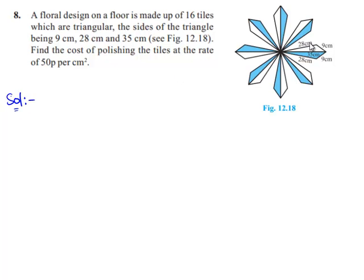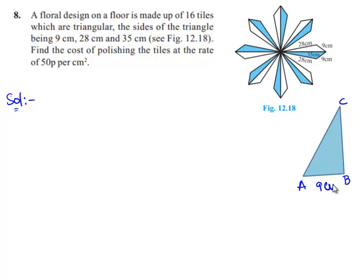Given in the figure is the floral design containing 16 tiles which are triangular. We shall first consider one triangle — let this be one triangle out of the 16 triangular pieces of tiles. We shall name this triangle A, B and C. As given in the figure, AB is 9 cm, BC is 28 cm, and AC is 35 cm.